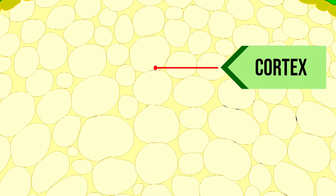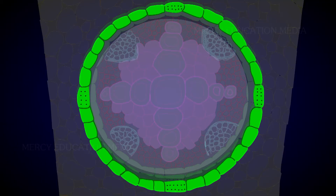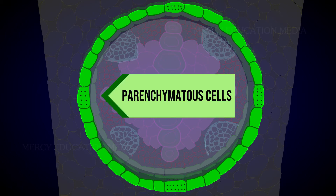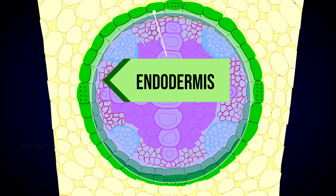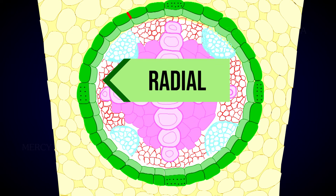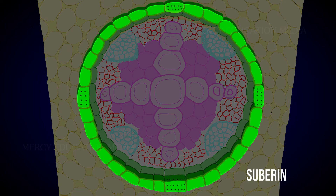The innermost layer of the cortex is the endodermis. Endodermis is made up of a single layer of barrel-shaped parenchyma cells. The stele is completely surrounded by the endodermis. The radial and inner tangential walls of endodermis are thickened with suberin.